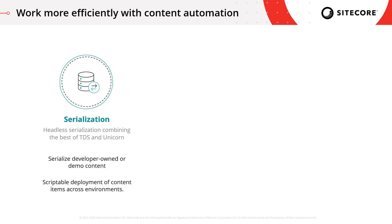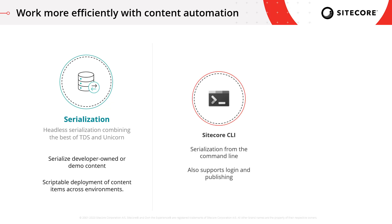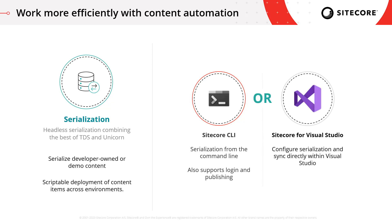To make use of this new serialization approach, you have two different tools to help you. The first is the Sitecore CLI, a command line tool to interact with your Sitecore instance. The second is Sitecore for Visual Studio, a graphical tool to interact with your Sitecore instance from within Visual Studio itself. The crucial thing to note is that the feature set between the two will be the same — you can just choose your preferred way of working, either on the command line or through a GUI.